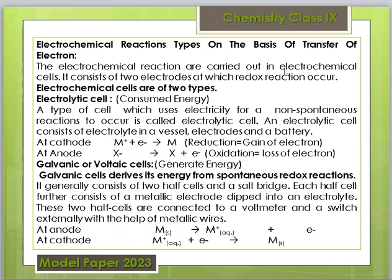Electrochemical reactions are carried out in electrochemical cells. The cell consists of two electrodes at which redox reactions occur. There are two types of electrochemical cells: one is the electrolytic cell and one is the galvanic cell (also called the voltaic cell).